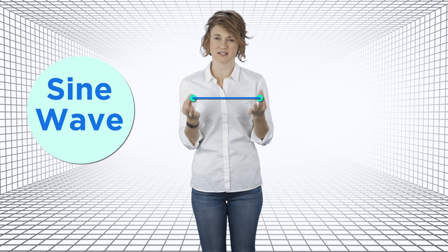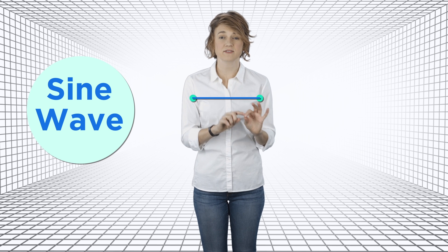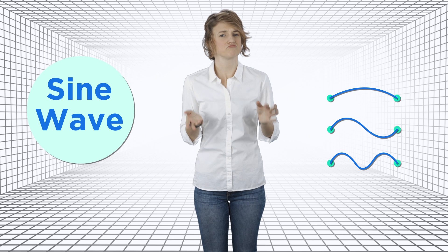Because our string is fixed in place at the ends, it can't make any old sine wave. It has to have exactly one bump, or two bumps, or three bumps, or four, five, six. You get the point.